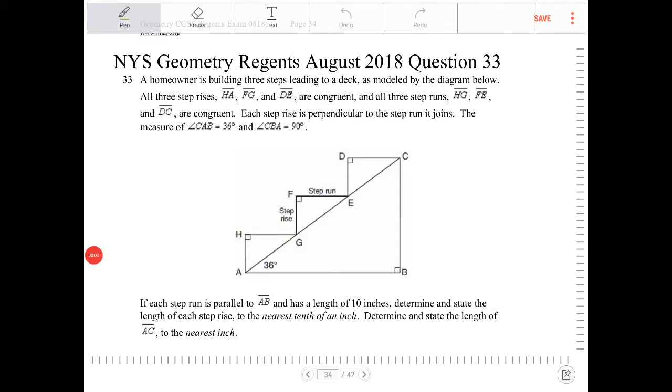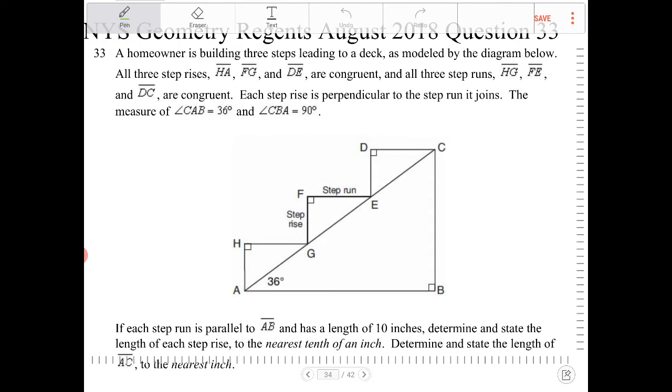A homeowner is building three steps leading to a deck as modeled by the diagram below. All three step rises HA, FG, DE are congruent and all three step runs HG, FE, and DC are congruent. So let me just label that really quickly here, HA, FG. That means these verticals are congruent and the horizontals are congruent.